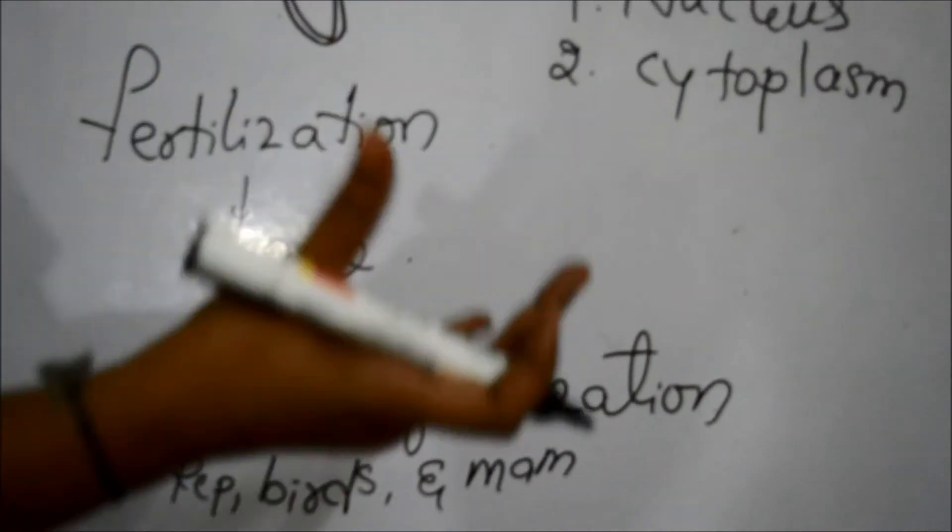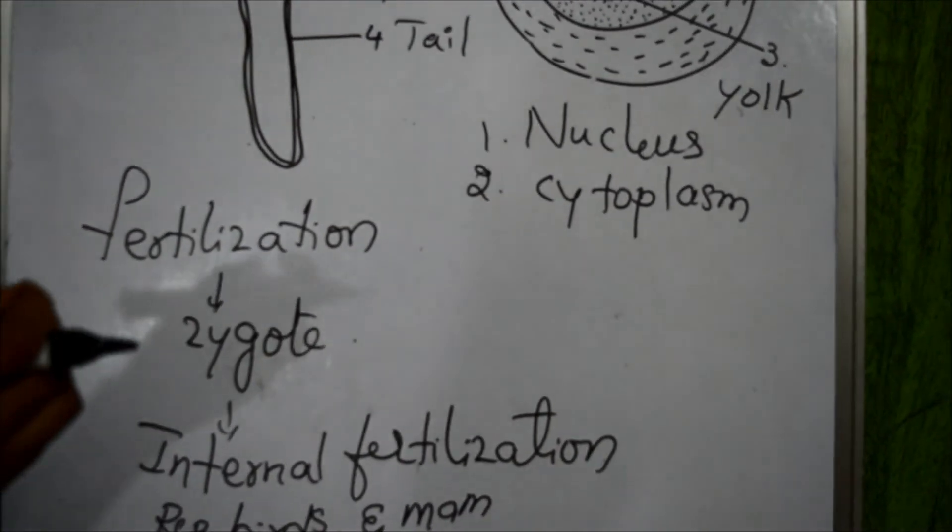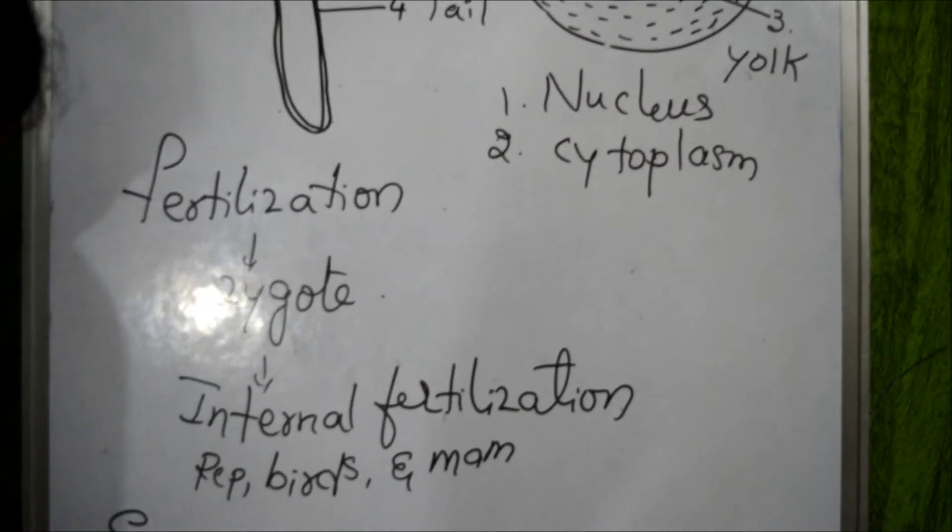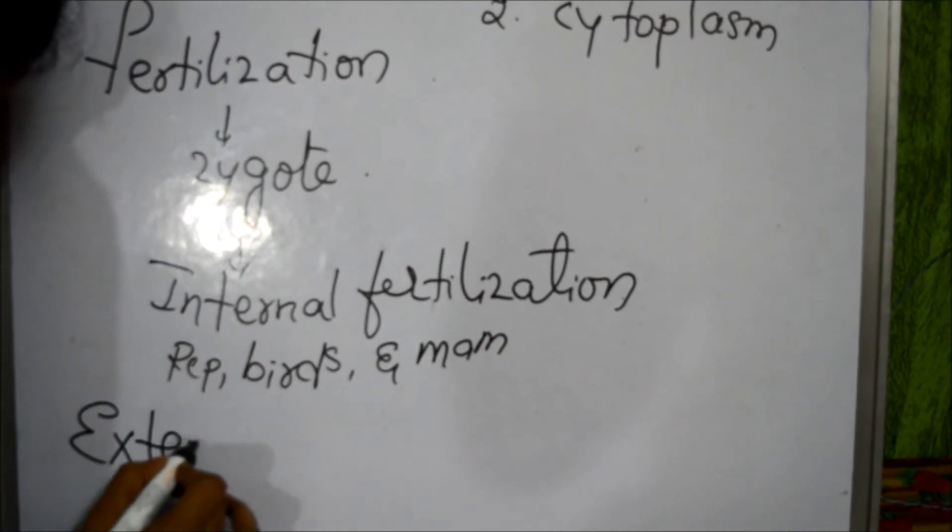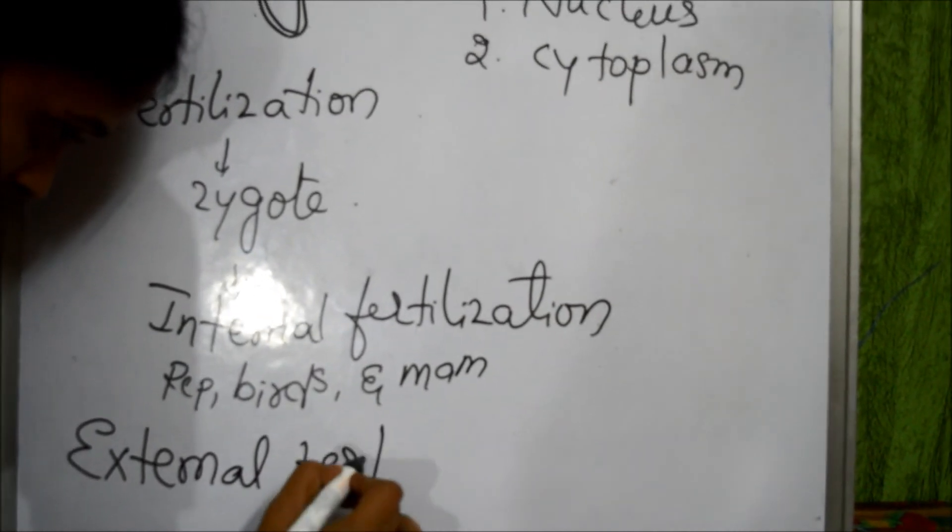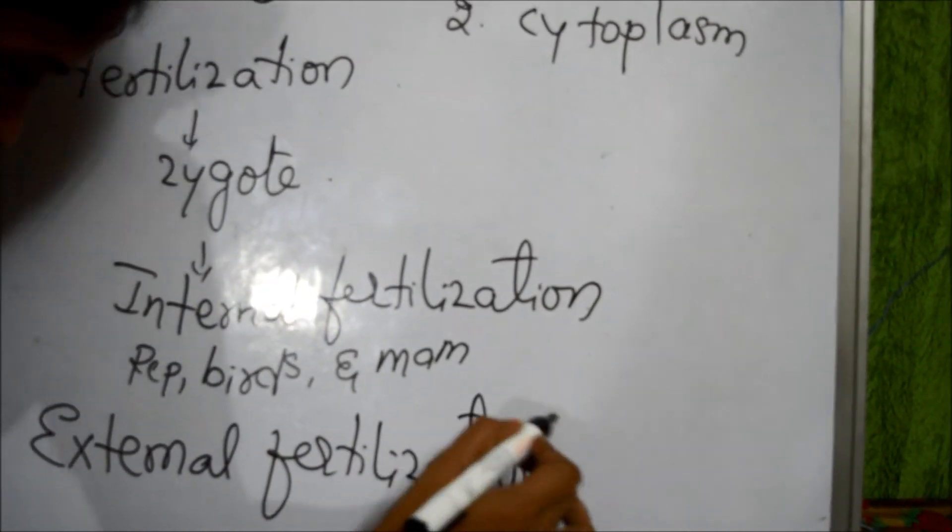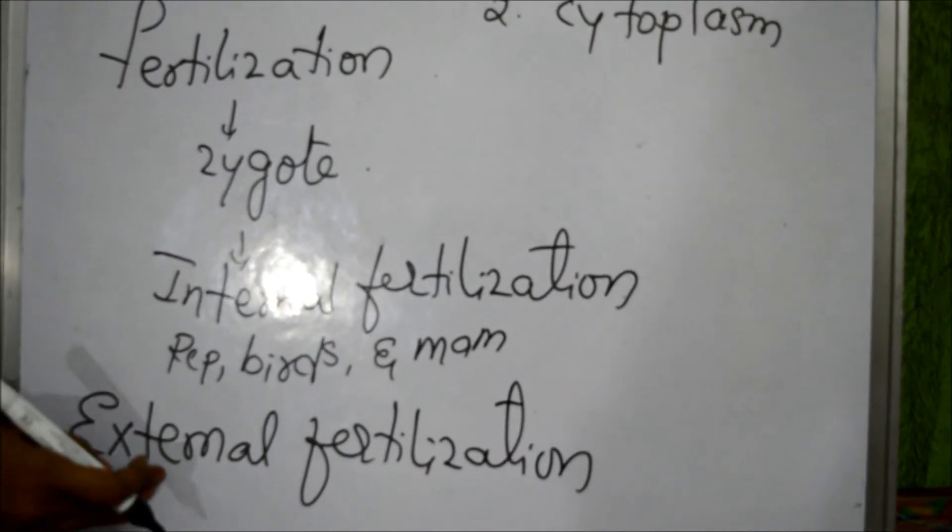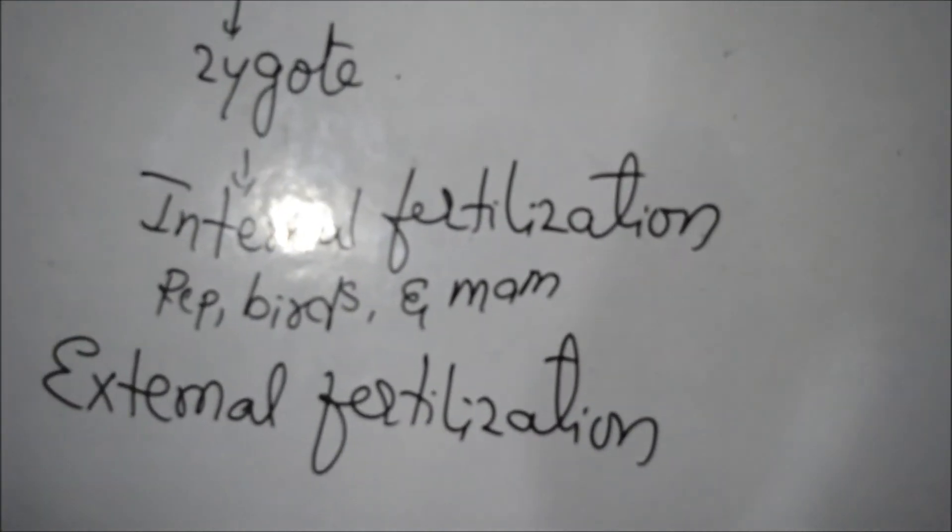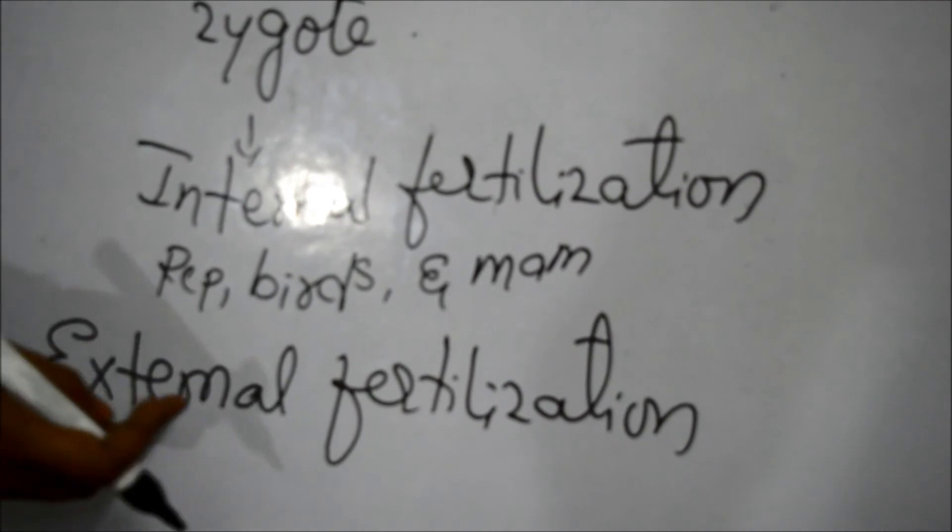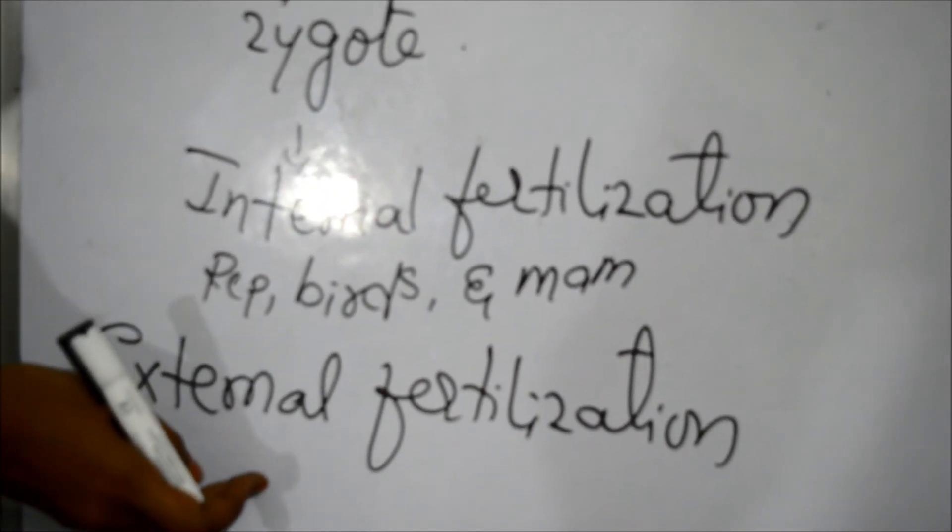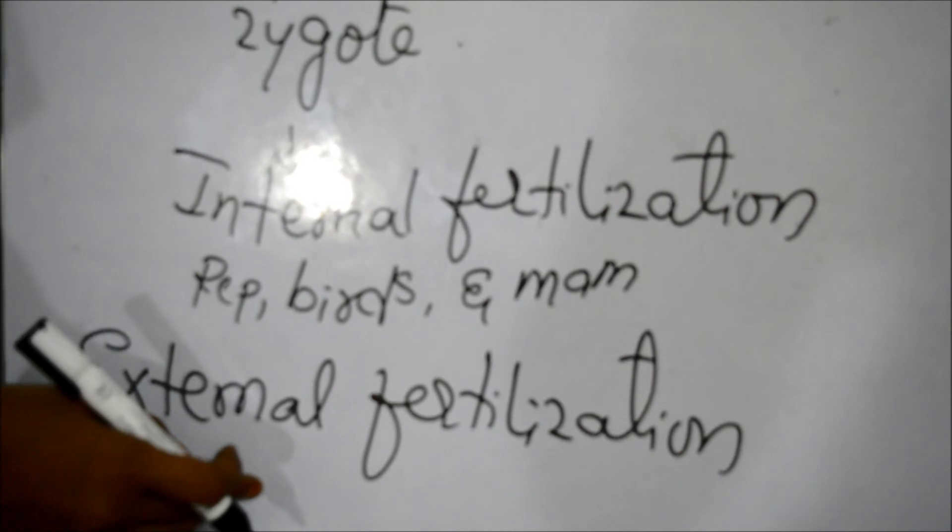The fertilization that takes place outside of female organism is known as external fertilization. This type of fertilization takes place out of the female organism. Examples are fishes and amphibians which take place this external fertilization.